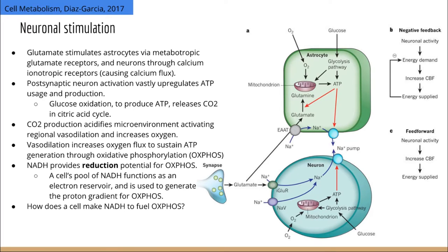I'm hoping that we're all familiar with a neuronal action potential and stimulation by excitatory amino acid or neurotransmitter glutamate. When a postsynaptic cell releases glutamate it primarily binds two different receptors: either ionotropic or metabotropic receptors. Metabotropic receptors are primarily located on astrocytes, which are like neuronal helper cells that use their end feet to envelop a synapse to form what's called a tripartite synapse.